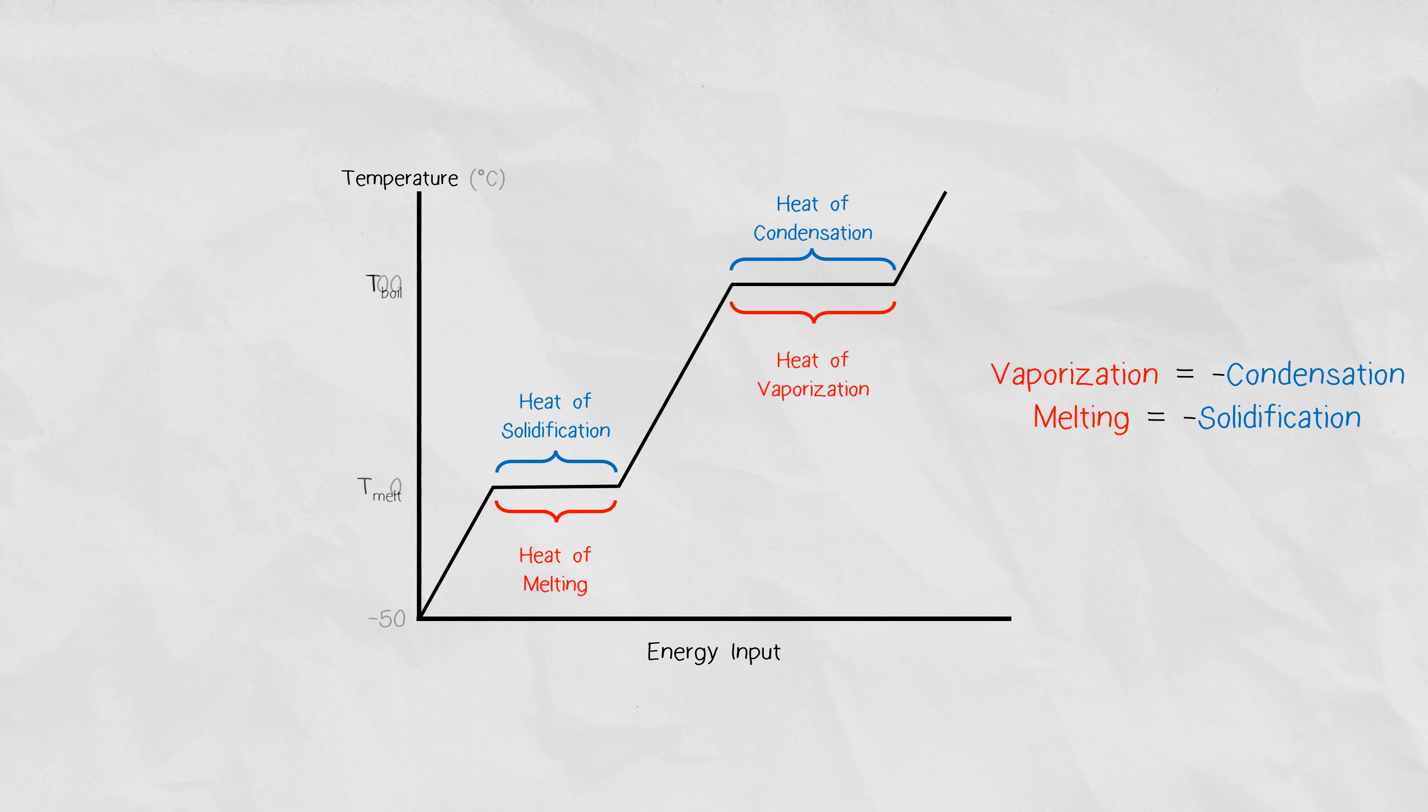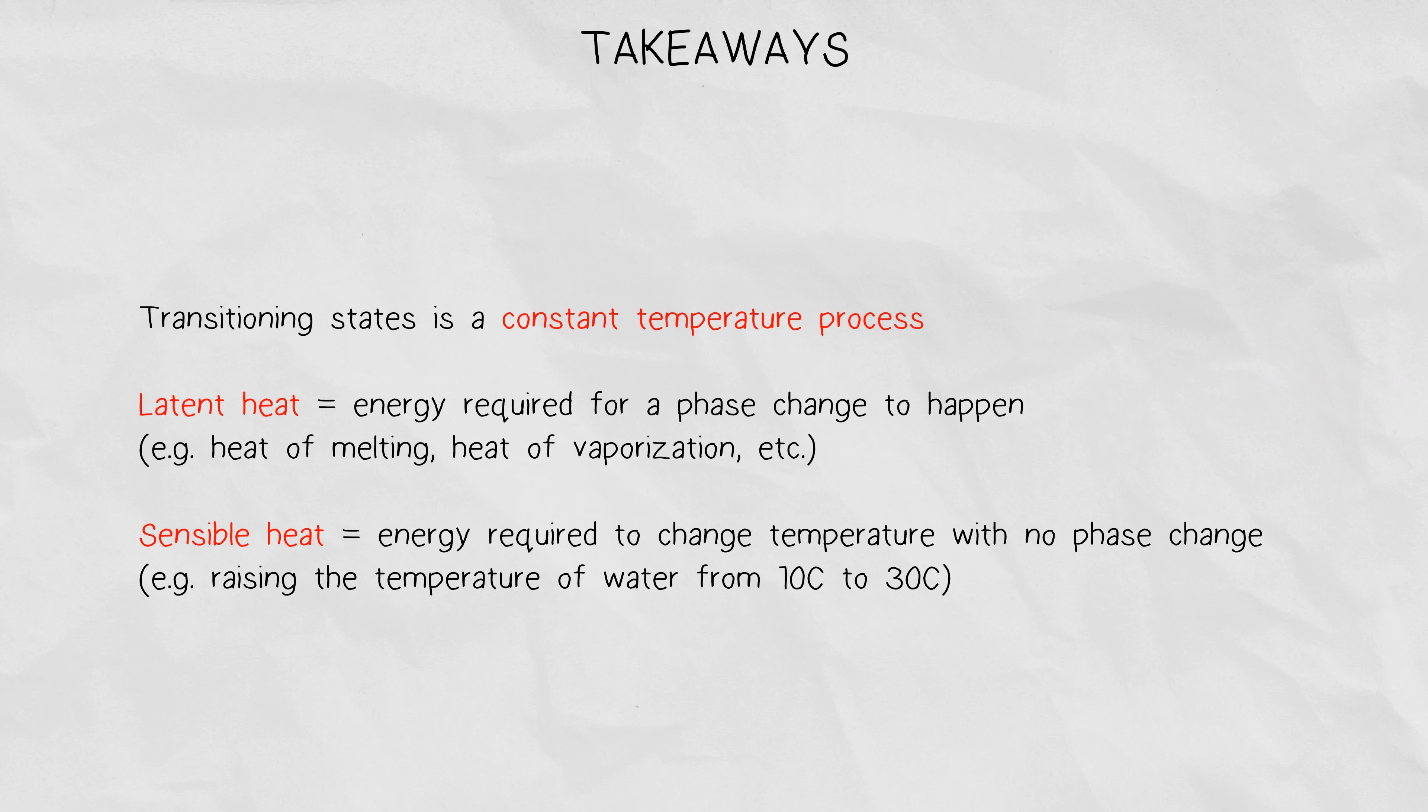So to generalize this graph, I'm going to replace 0 Celsius into T sub melt and 100 Celsius with T sub boil. The key takeaway from this chart is that transitioning states is a constant temperature process. The energy absorbed or released for transitioning states is called latent heat, and the energy absorbed or released to change temperature is called sensible heat.